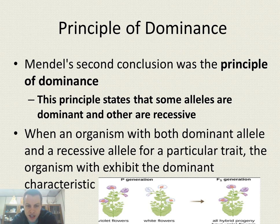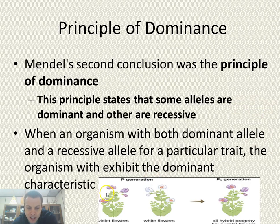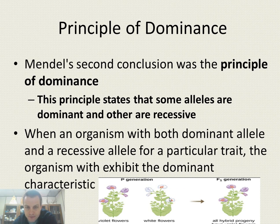The principle of dominance states that some alleles are dominant and others are recessive. Dominant alleles mask the recessive allele, so if an organism has both a dominant and a recessive allele for a particular trait, it will exhibit the dominant characteristic. For example, in the green and yellow cross, every F1 plant was green — so green is dominant over the recessive yellow. Similarly, purple flowers crossed with white flowers produce only purple in F1, meaning purple is dominant over white. That's the principle of dominance.